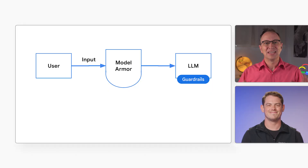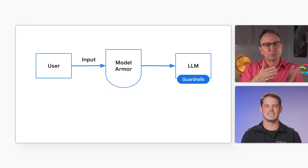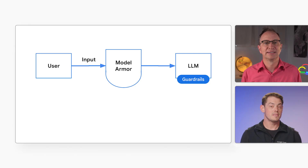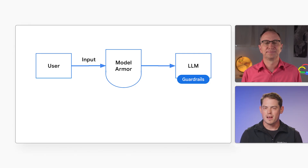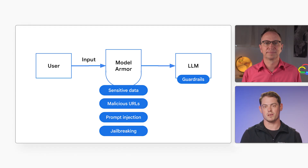This looks very useful. But I have so many questions, Aaron. First off, don't generative AI models include protection and guardrails? Yes, they do. But they are not specialized in detecting sensitive data, malicious URLs, prompt injection, and jailbreaking attempts. Model Armor is.